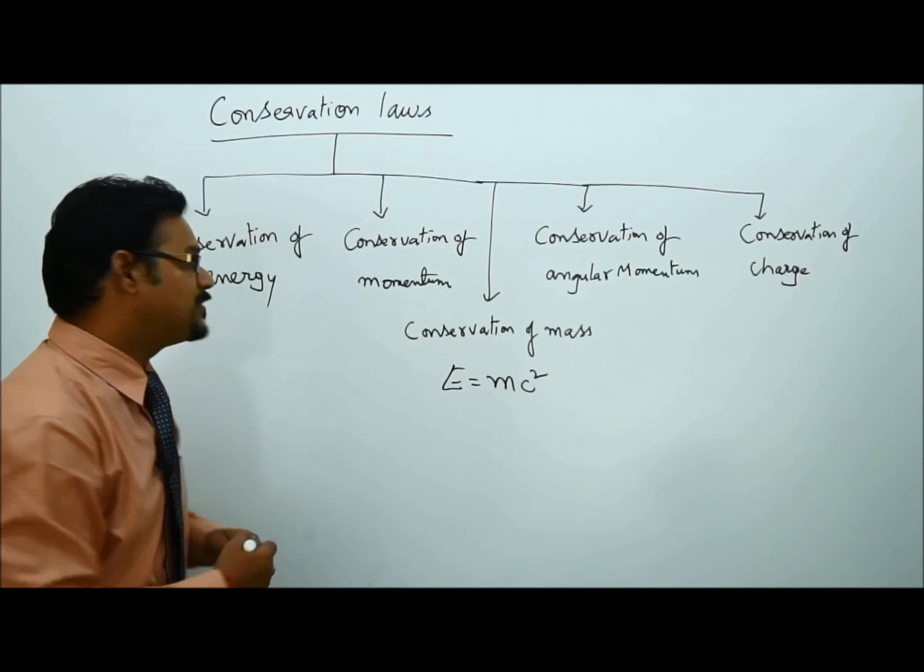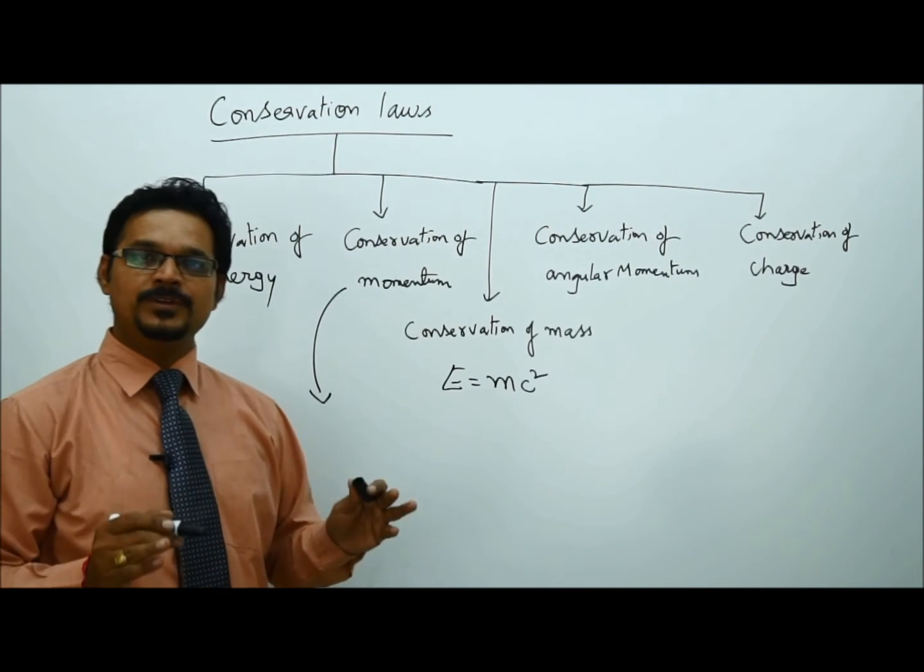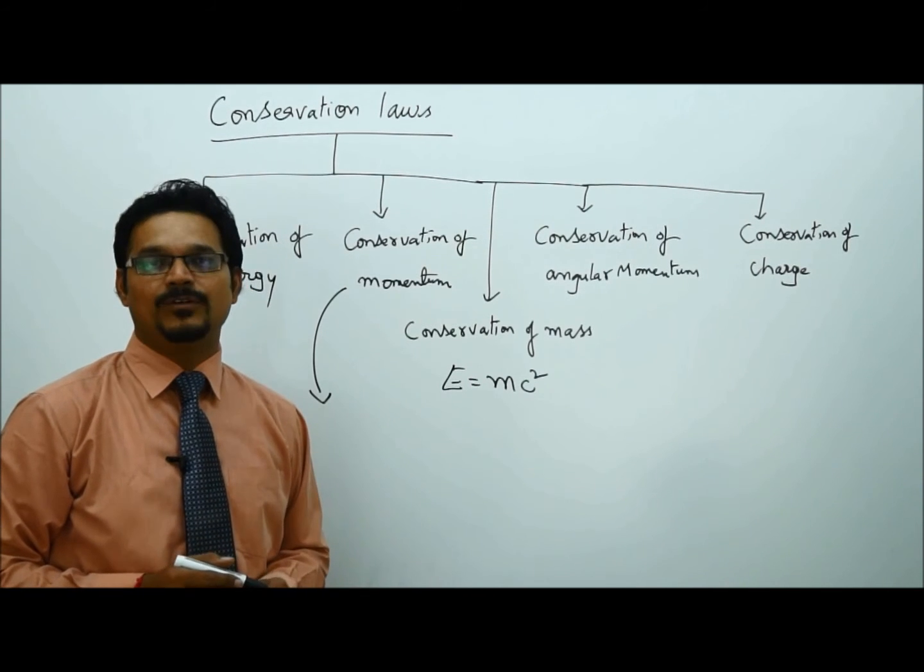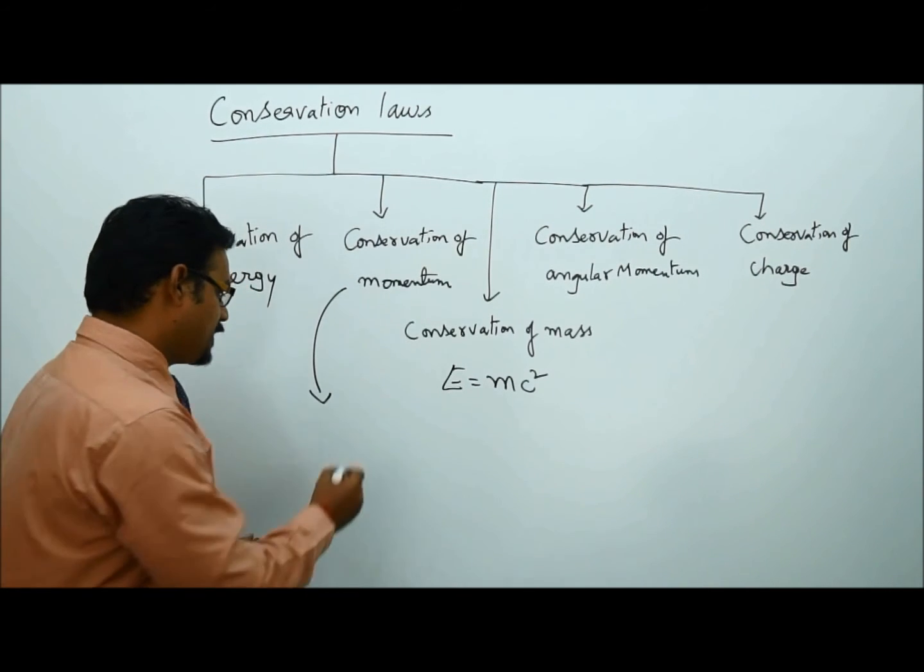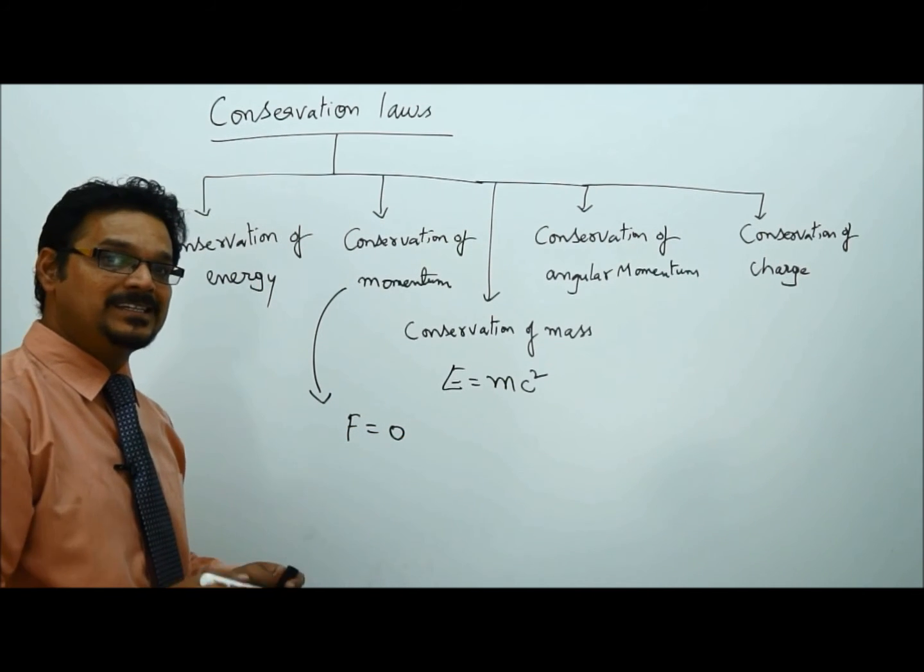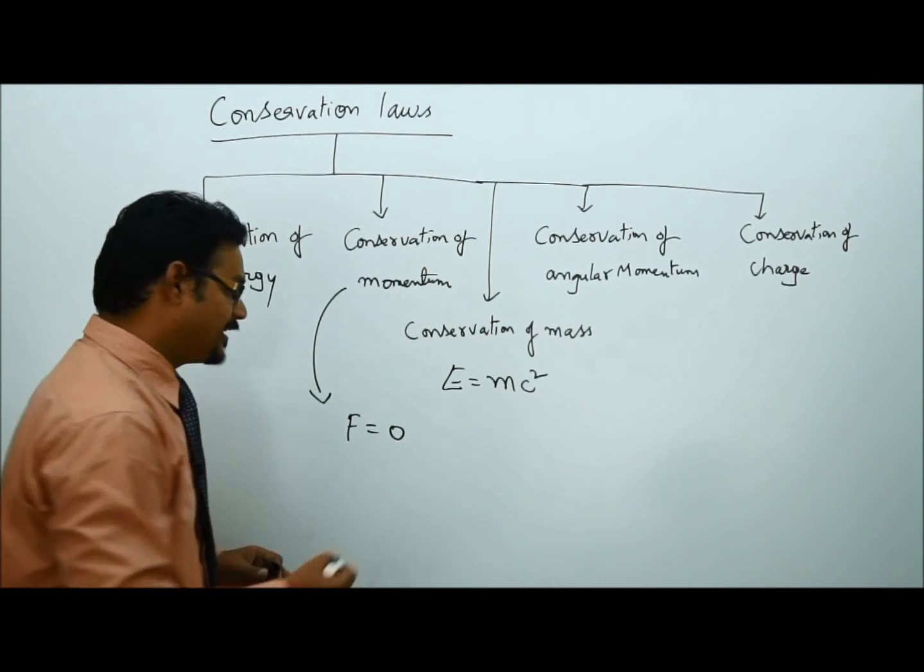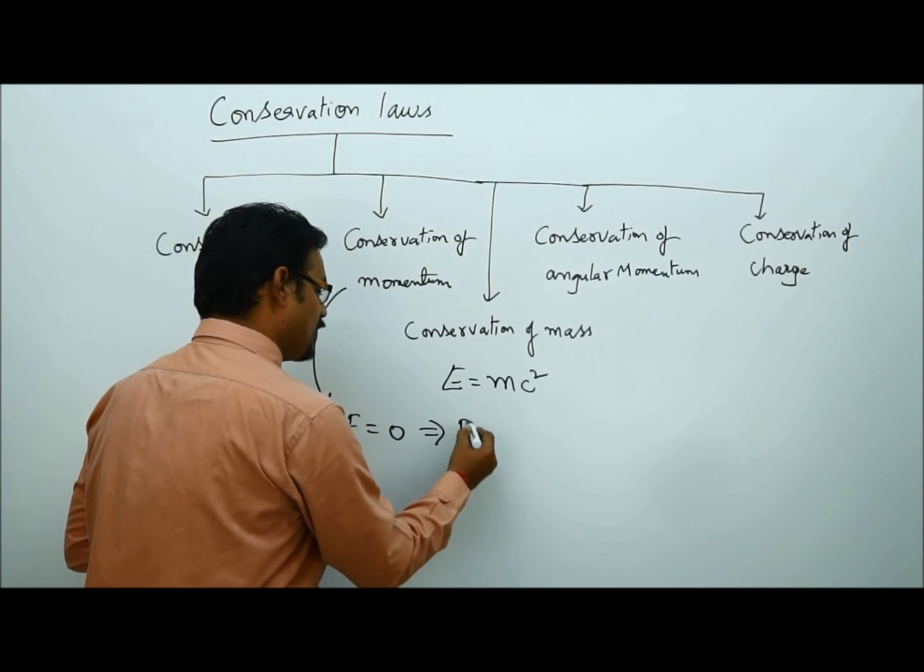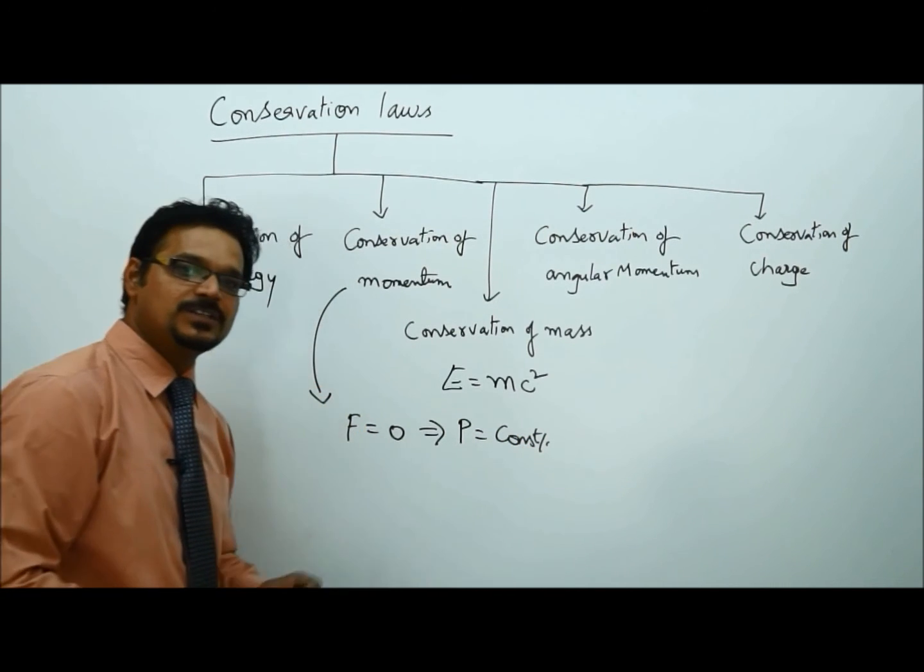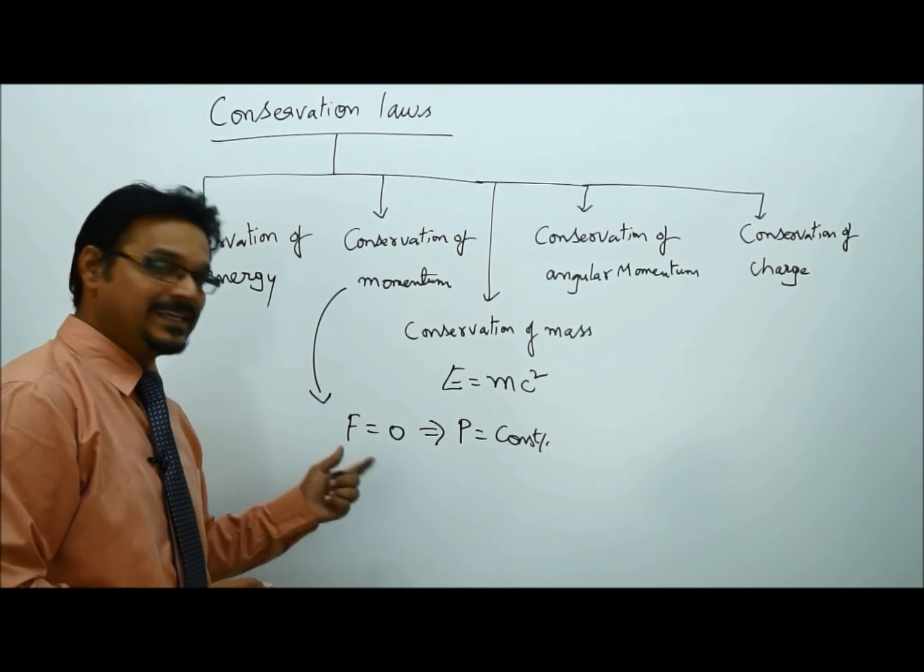So conservation of momentum says total momentum remains constant unless an external force acts on the body. That means when F equals zero, an external force is not acting on the body, force is not acting, implies momentum P equals constant. This is what conservation of momentum. How is it possible? Let me derive the formula.